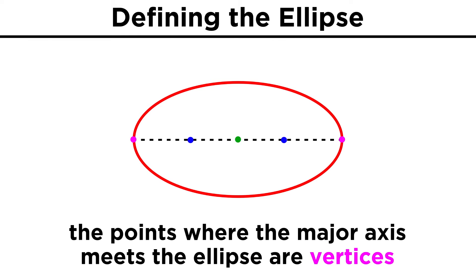At each end of the major axis, we can find a vertex, and that's all the terminology we need to know.